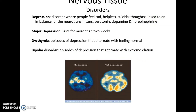Disorders associated with nervous tissue include depression, where people feel hopeless and may have suicidal thoughts. This has been linked to an imbalance in neurotransmitters such as serotonin, dopamine, and norepinephrine. Major depression can last more than two weeks. Dysthymia involves episodes of depression alternating with feeling normal, and bipolar disorder involves episodes of depression alternating with feeling extremely elated. Brain imaging shows different activity between depressed individuals and those who are not depressed.